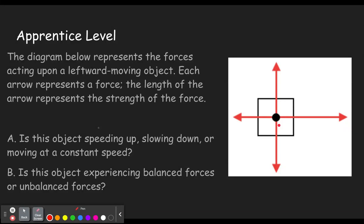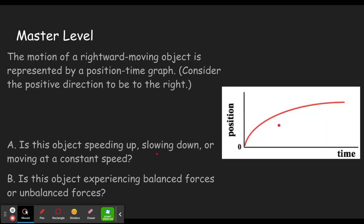And so then on the master level, which is the next level, we see that they add in both position time graphs, which you see here and dot diagrams. So here, I'll link a video. The first half of this acceleration video describes what dot diagrams are and how you can tell whether the object is speeding up or slowing down, which is crucial to answering these questions. And I will also link a position time graph video here.